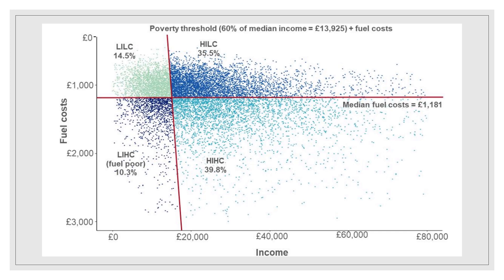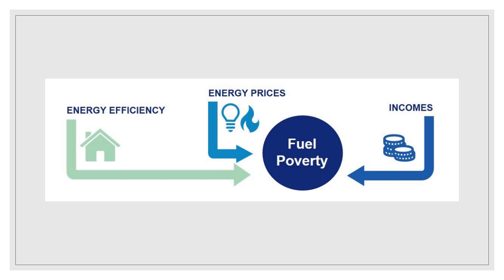Another issue with the current system of fuel provision is the prevalence of fuel poverty. In the UK, 10.3% of people qualify as fuel poor, where their fuel costs are above the national median and in order to meet these costs they must live below the poverty line. Fuel poverty is affected by three factors: energy efficiency, energy prices and incomes.